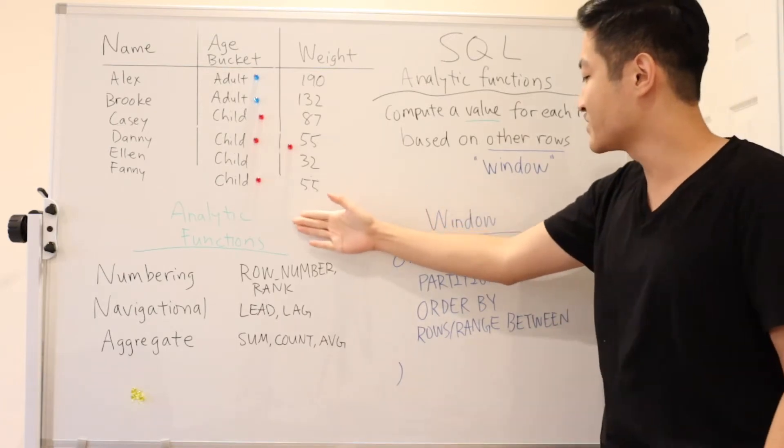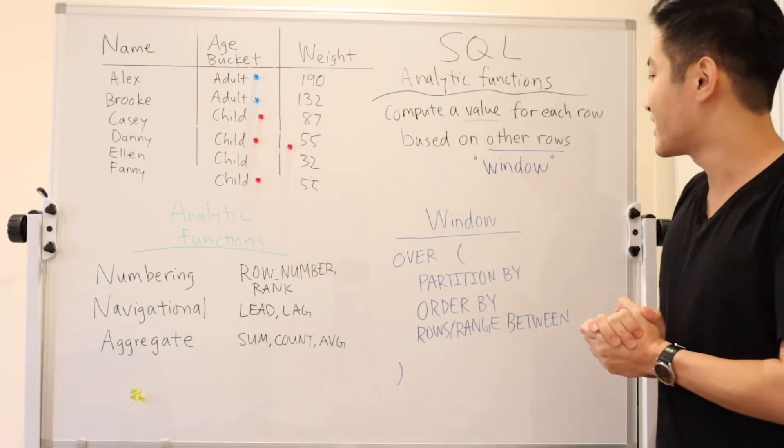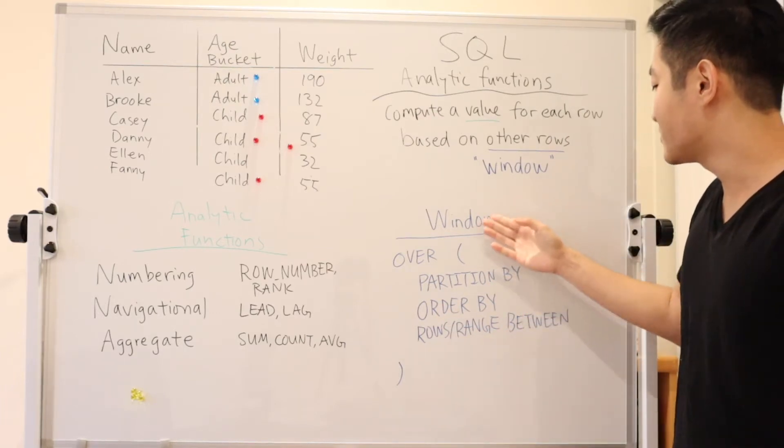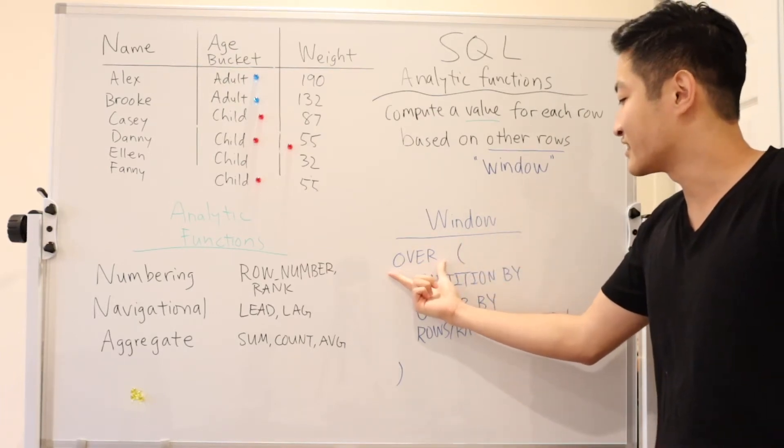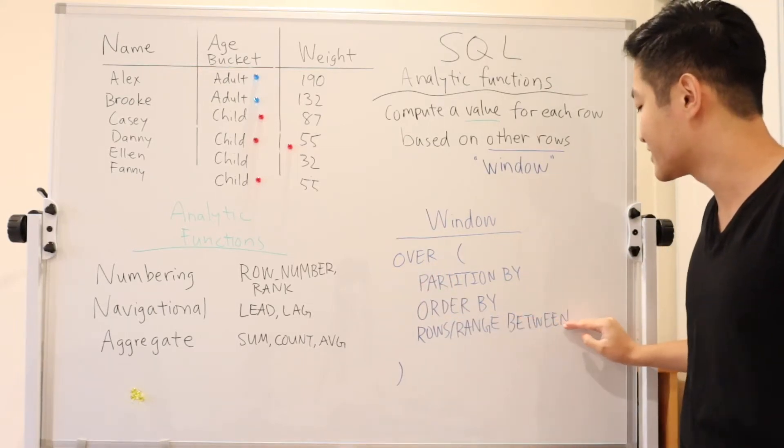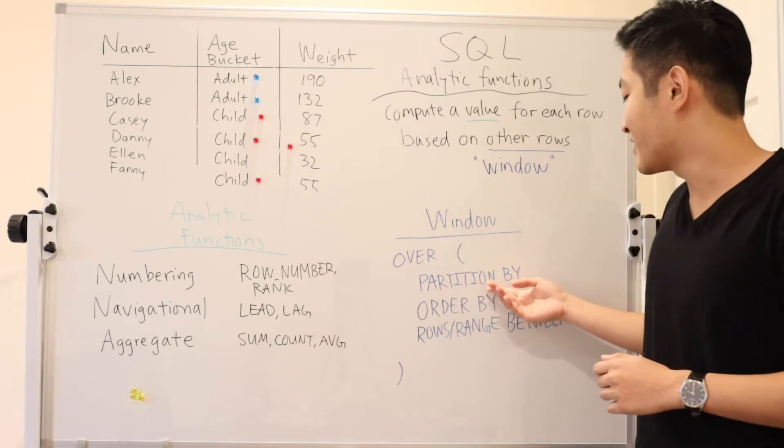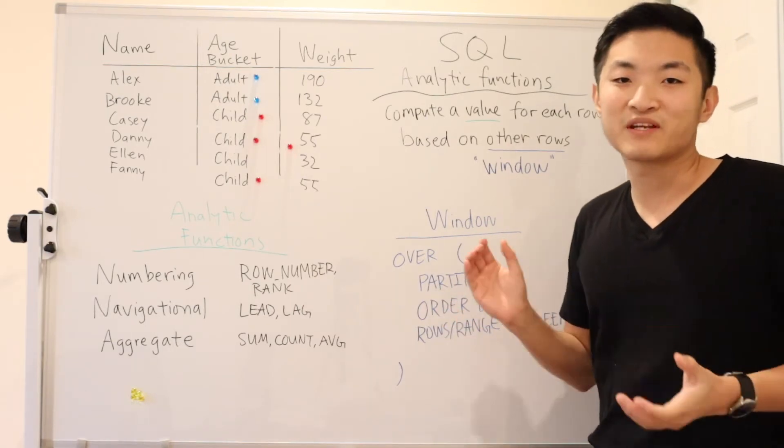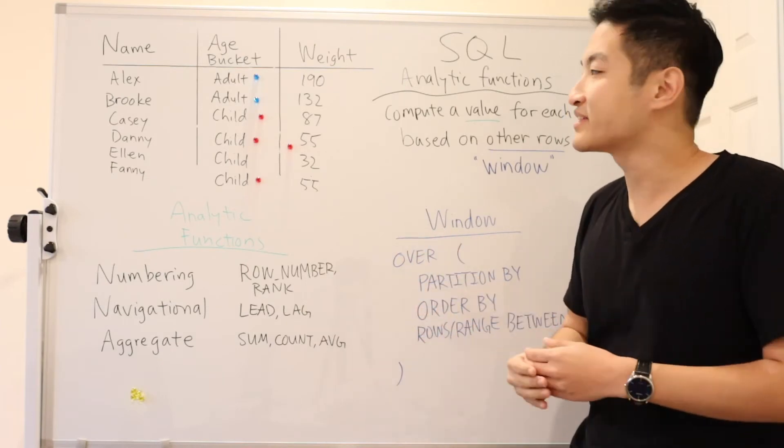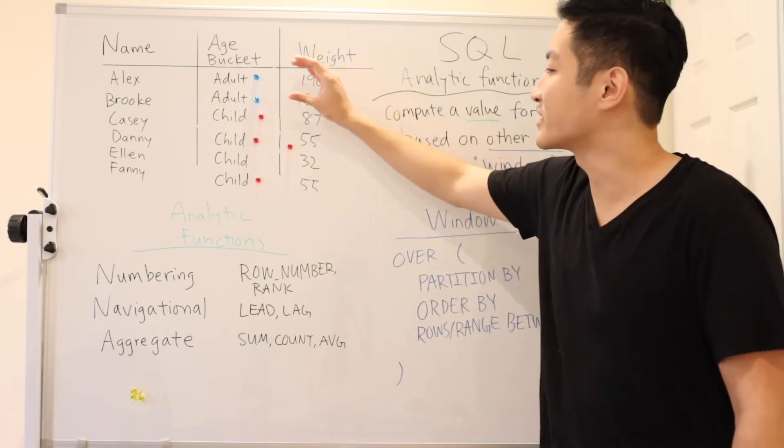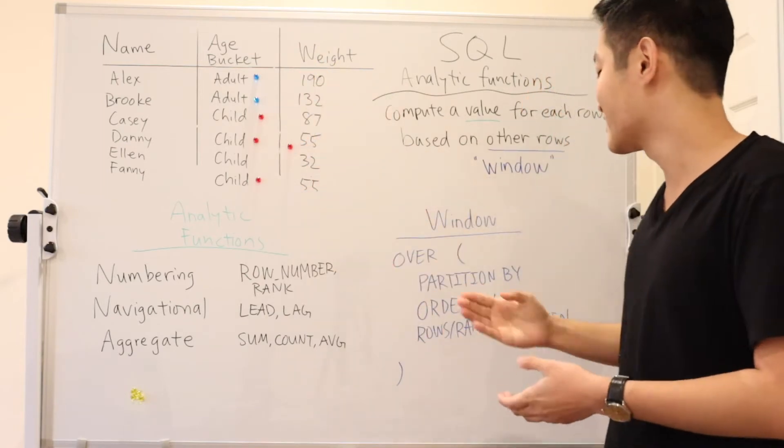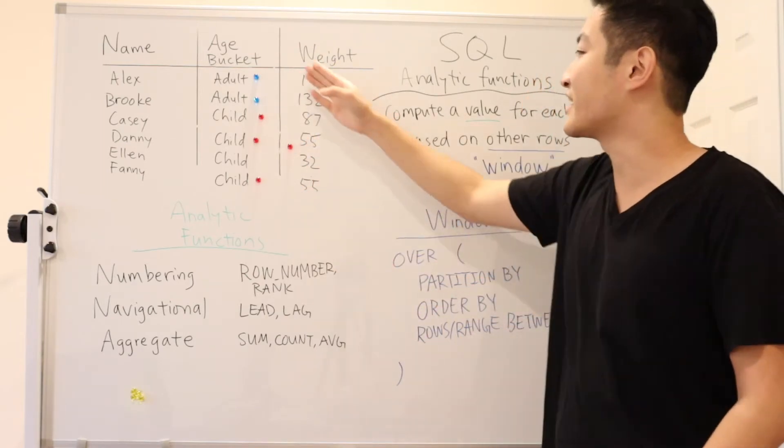All right, now let's move on to talk about how you define this window. So in SQL, windows are defined using the over keyword. And then the three sub clauses are optional. The first sub clause partition by you can think of as putting together relevant rows. For example, when you're ranking weights, you might only want to rank weights within each age bucket because adults are very different from children. So that's where you can partition by age bucket.